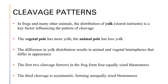In frogs and many other animals, the distribution of yolk is a key factor influencing the pattern of cleavage. The yolk is responsible for the storage of nutrients. In the cleavage patterns, you will see the vegetal pole, where the yolk is the majority of the time, and then the animal pole, which has less yolk. The difference in yolk distribution results in animal and vegetal hemispheres that differ in appearance. The first two cleavage furrows in the frog form four equally sized blastomeres, and then the third cleavage is asymmetric, forming unequally sized blastomeres.